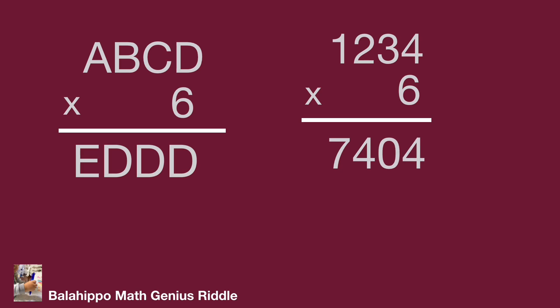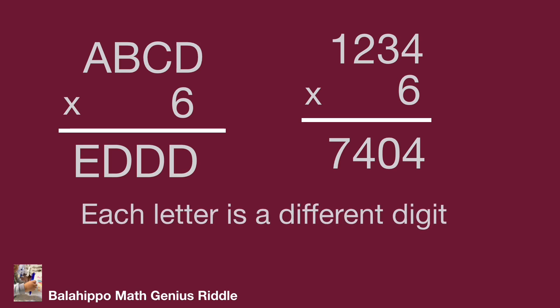Notice that we have basic conditions: A, B, C, D, E — each letter is a different digit. They could be equal to 0, 1, 2, 3, ... to 9. And due to it being a four-digit number, A and E are not equal to 0. Obviously our example 1, 2, 3, 4 times 6 equals 7, 4, 0, 4 — that cannot meet the new four-digit value E, D, D, D criteria. That's not the right answer.